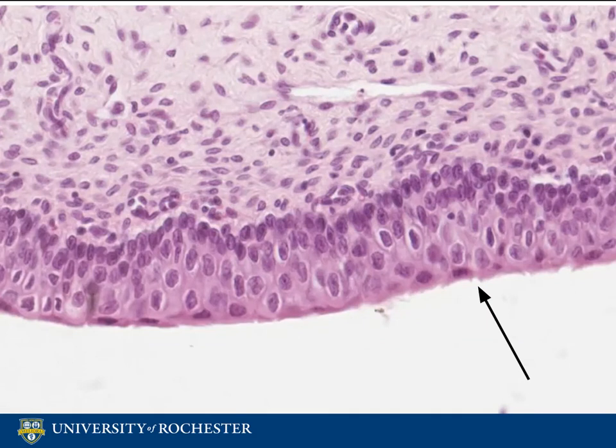The innermost part of the urinary bladder is the mucosal layer, which is lined by a transitional epithelium — the urothelium — as indicated by the arrow. When the bladder is relaxed, the epithelium layer appears to be made up of rounded to cuboidal cells. You may see special urothelial cells known as umbrella cells along the surface of the bladder epithelium, which have ample eosinophilic cytoplasm and often two nuclei.